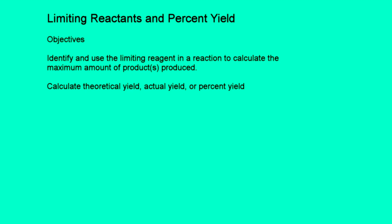Hey guys, here we are in part two of our unit on stoichiometry. This is going to be a short one because all we're going to talk about today is limiting reactants and how to calculate percent yield.